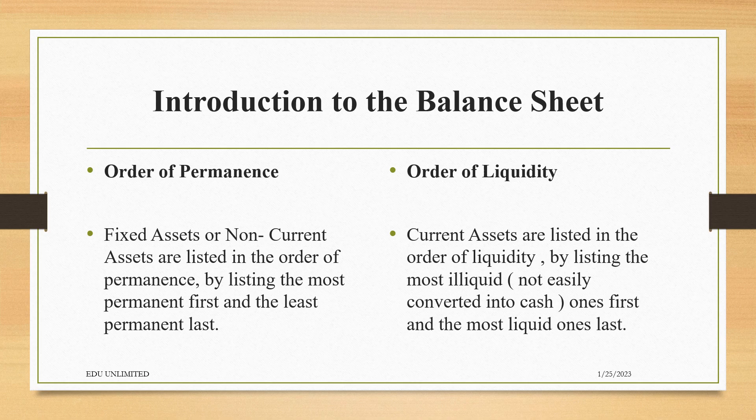The Order of Liquidity is the order in which current assets are listed in the Balance Sheet, by listing the Most Illiquid — meaning not easily converted into cash — assets first, and last we list the Most Liquid Assets. For example, Stock would be listed before Cash at Bank, and Cash at Bank would be listed before Cash in Hand.